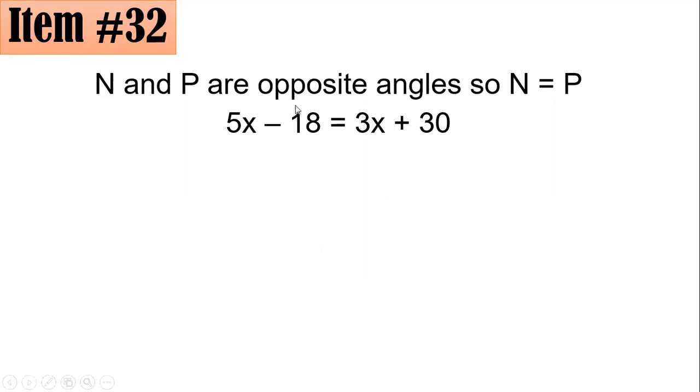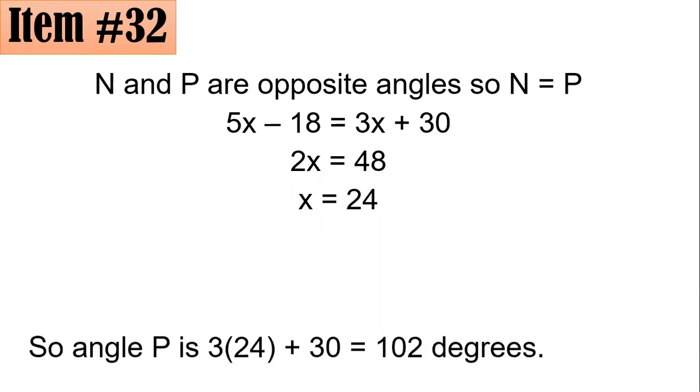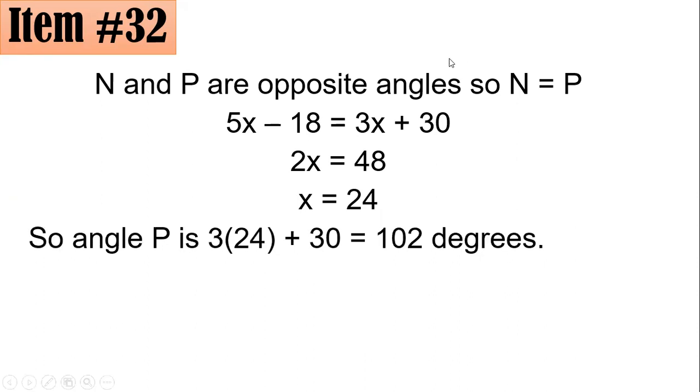And we have to remember that opposite angles of a rhombus or of any parallelogram are in fact equal. That is why angle N is equal to angle P and we have 5x minus 18 equals 3x plus 30. Subtracting both sides by 3x and adding both sides by 18, we have 2x equals 48. Dividing both sides by 2 gives us x as 24.